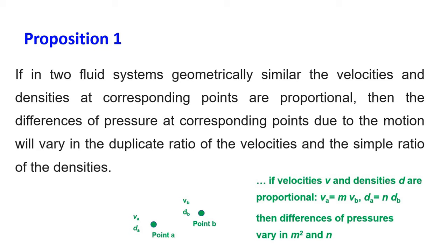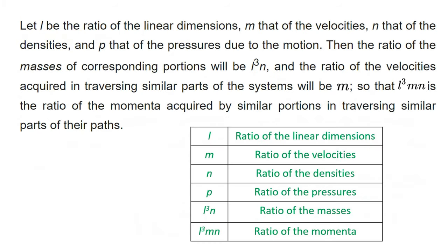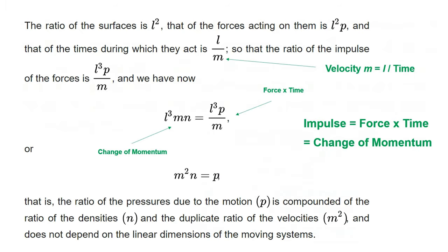Proposition 1. If in two fluid systems, geometrically similar, the velocities and densities at corresponding points are proportional, then the differences of pressure at corresponding points due to the motion will vary in the duplicate ratio of the velocities and the simple ratio of the densities. Let L be the ratio of the linear dimensions, M that of the velocities, N that of the densities, and P that of the pressures due to the motion. Then the ratio of the masses of corresponding portions will be L³N, and the ratio of the velocities acquired in traversing similar parts of the systems will be M, so that L³MN is the ratio of the momenta acquired by similar portions in traversing similar parts of the path. The ratio of the surfaces is L², that of the forces acting on them is L²P, and that of the times during which they act is L over M, so that the ratio of the impulse of the forces is L³P over M, and we have L³MN = L³P over M, or M²N = P.